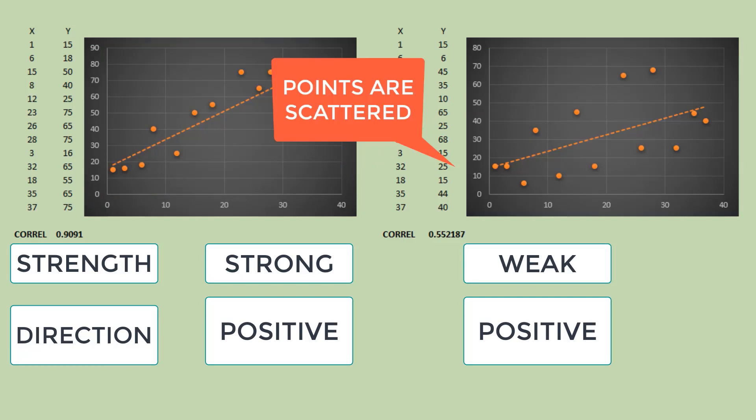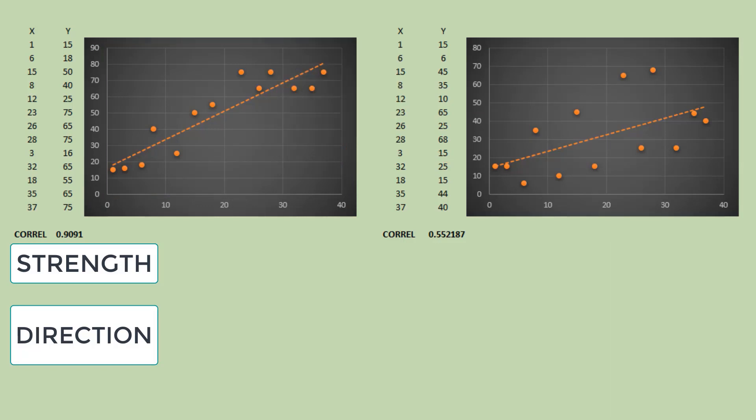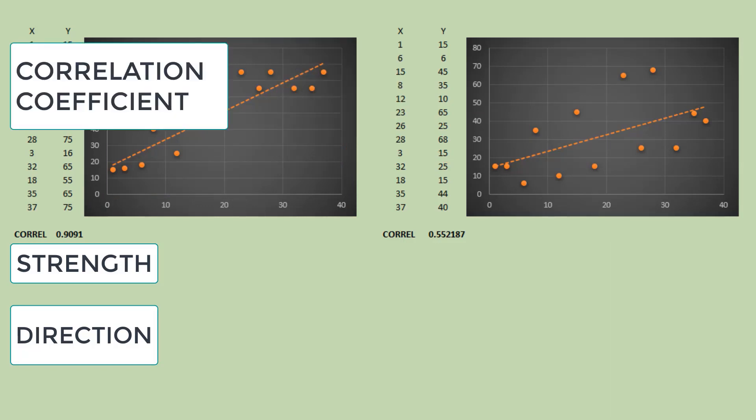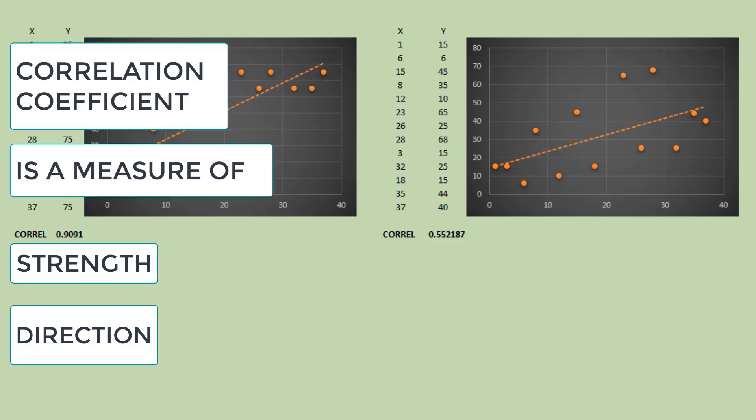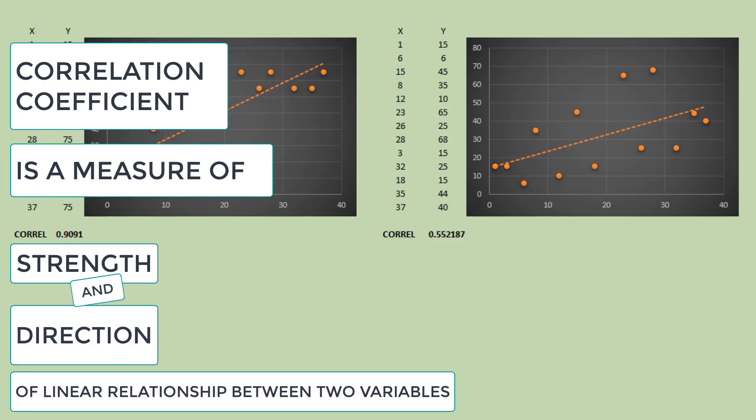Again, the correlation coefficient is a measure of strength and direction of linear relationship between two variables.